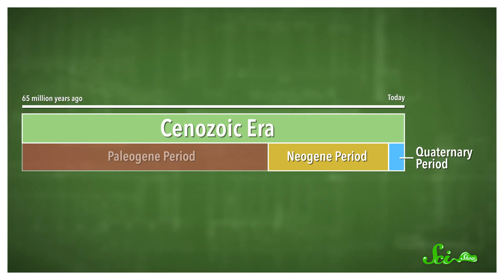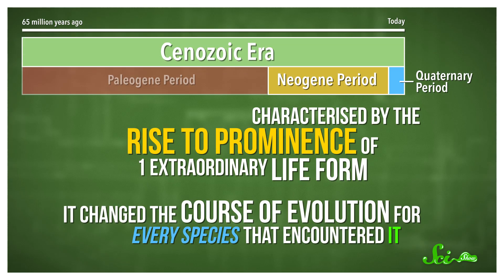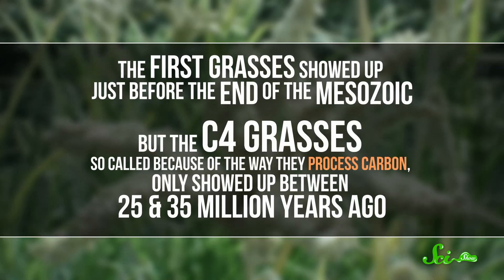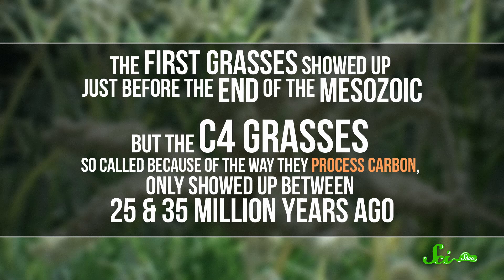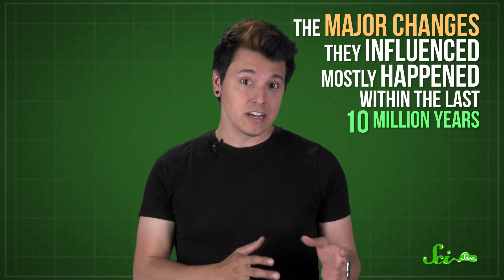The later two periods of the Cenozoic, starting with the Neogene, were characterized by the rise to prominence of one extraordinary life form that changed the course of evolution for every species that encountered it. I'm talking, of course, about grass. Grass is so common that most of us probably don't think about it — it just belongs on the ground, always has. But grass is a relative newcomer to the evolutionary scene. The first grasses showed up just before the end of the Mesozoic, but the C4 grasses, so-called because of the way they process carbon, only showed up between 25 and 35 million years ago. Those are the important ones, and the major changes they influenced mostly happened within the last 10 million years.